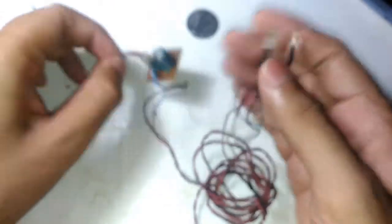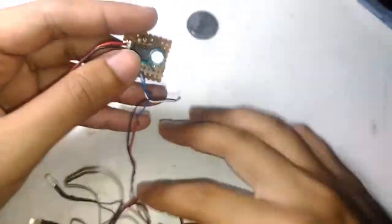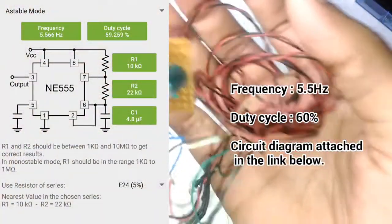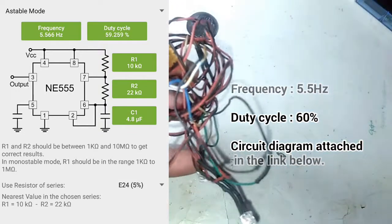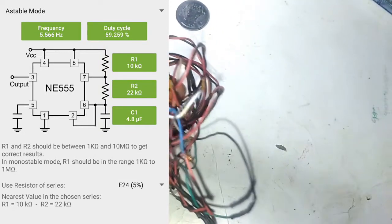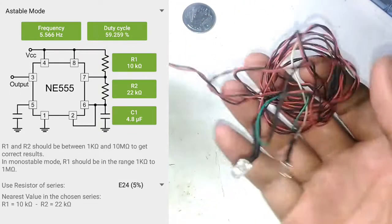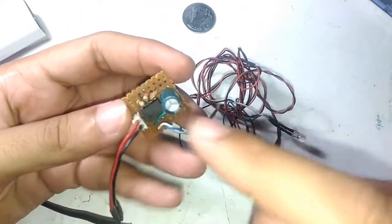I have not connected any resistors at all. That's because the current output is really low; it's not going to damage the LEDs in any way. The circuit diagram for this particular circuit will appear on the screen right now.